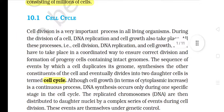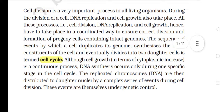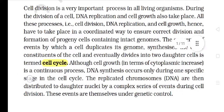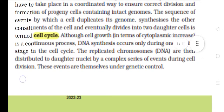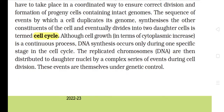10.1 Cell Cycle. Cell division is a very important process in all living organisms. During the division of a cell, DNA replication and cell growth also take place. All these processes — cell division, DNA replication, and cell growth — have to take place in a coordinated way to ensure correct division and formation of progeny cells containing intact genomes. The sequence of events by which a cell duplicates its genome, synthesizes the other constituents of the cell, and eventually divides into two daughter cells is termed the cell cycle.